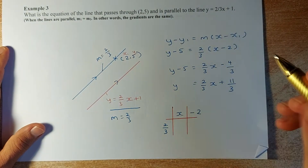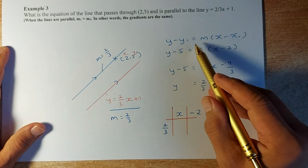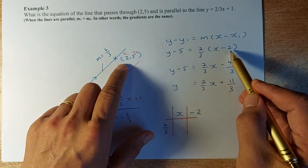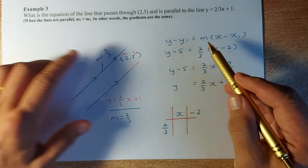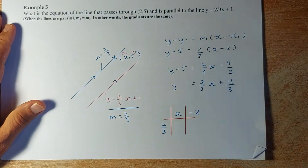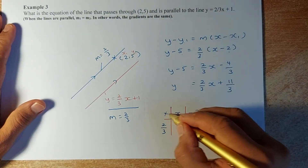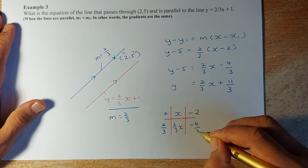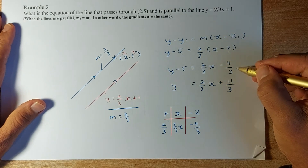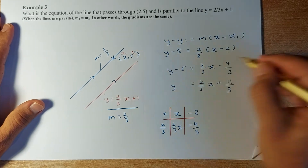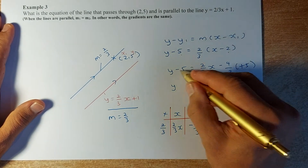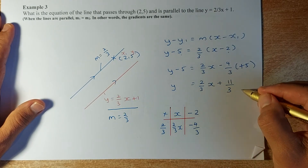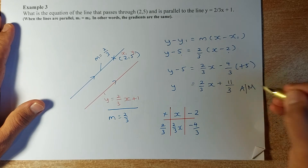Once you know the gradient, substitute into y minus y1 = m(x minus x1). Replace y1 with 5, x1 with 2, and m with 2/3. Expanding: (2/3) times x is (2/3)x, and (2/3) times (-2) is -4/3. Then add 5 to both sides: 5 minus 4/3 equals 11/3. So the equation of the line is y = (2/3)x + 11/3. That could be an achieve or merit depending on the year.